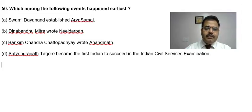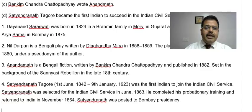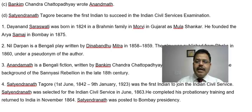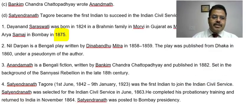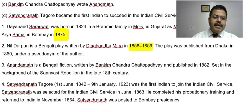Let us discuss each event one by one. Dayananda Saraswati was born in 1824 in a Brahmin family and he founded Arya Samaj in 1875. Nil Darpan is a Bengali play written by Dinabandhu Mitra in 1858-59, and published from Dhaka in 1860.